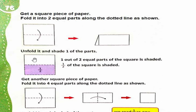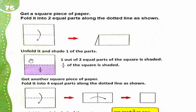Ab page ke total parts kitne hain? One, two. So denominator two hoga. Aur kitne parts shaded hain? Only one. So numerator one hoga. So hum is fraction ko likhenge: one by two. Yaani one by two of the whole paper is shaded. Total parts — two — woh denominator, niche likhenge two. Aur shaded part — upar likhenge. So one by two is the fraction.